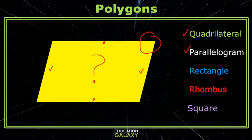That is not a right angle, so it's not a rectangle. These two sides are not congruent, so it's not a rhombus. And if it's not a rectangle and a rhombus, it cannot be a square.